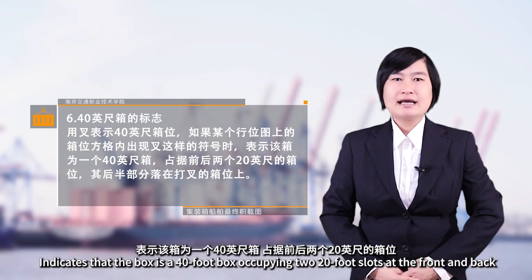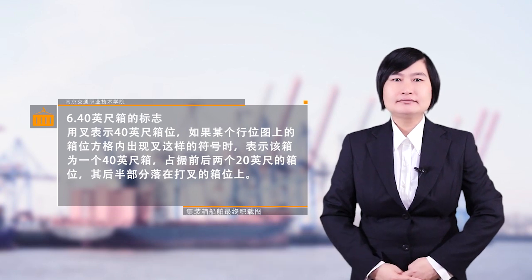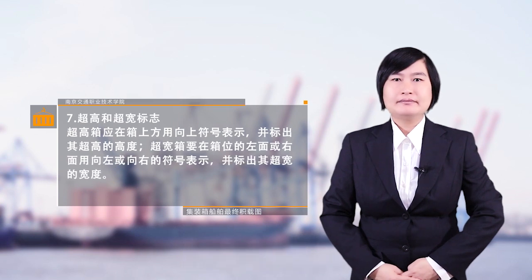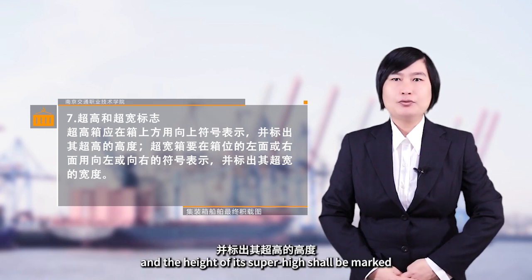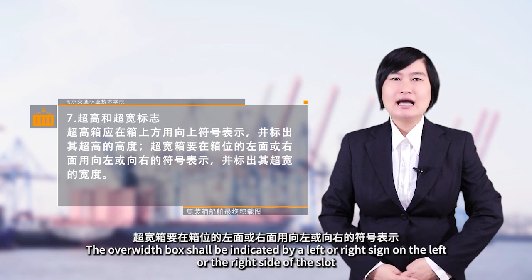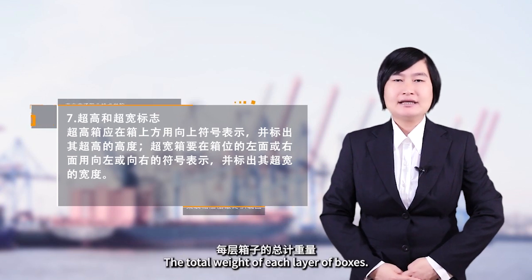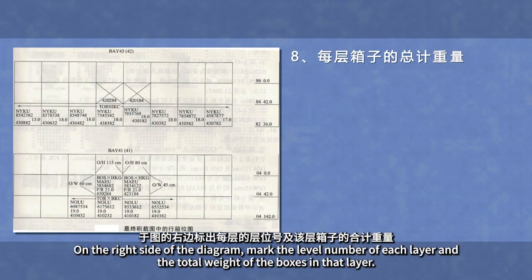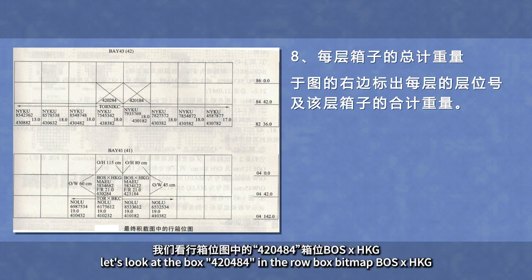如果某个舱位图上的箱位方格内出现X这样的符号时，表示该箱为一个40英尺的箱，占据前后两个20英尺的箱位，其后半部分落在打X的箱位上。超高箱应在箱上方用向上符号表示，并标出其超高的高度；超宽箱要在箱位的左面或右面用向左或向右的符号表示，并标出其超宽的宽度。每层箱子的总计重量在图的右边标出，标明每层的层位号及该层箱子的合计重量。